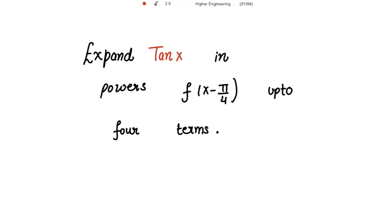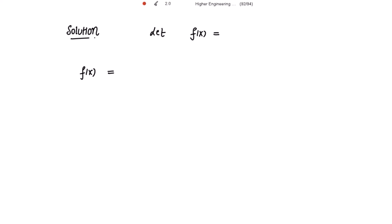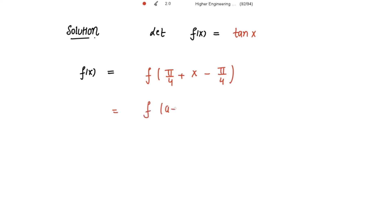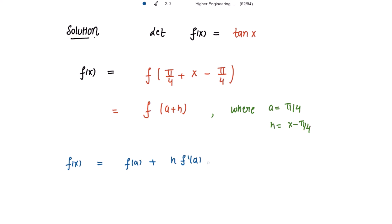We need to expand tan(x) in powers of (x - π/4) up to 4 terms. Let's take the function to be tan(x). Adding and subtracting π/4 to x, we can write this in the form f(a + h), where a = π/4 and h = (x - π/4). By Taylor's theorem: f(x) = f(a) + h·f'(a) + h²·f''(a)/2! + h³·f'''(a)/3! and so on. Let's consider only these four terms.